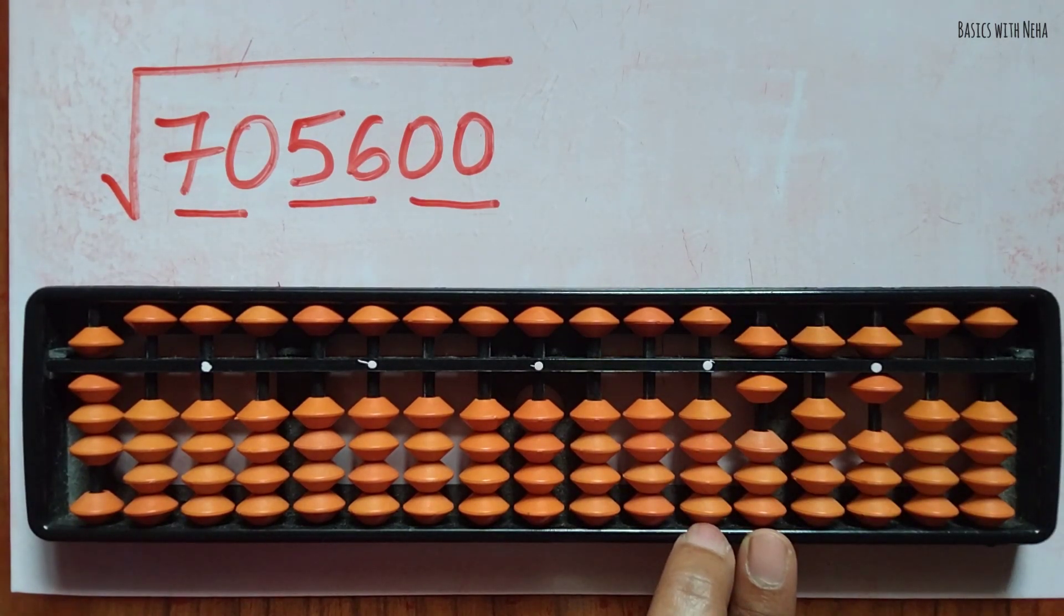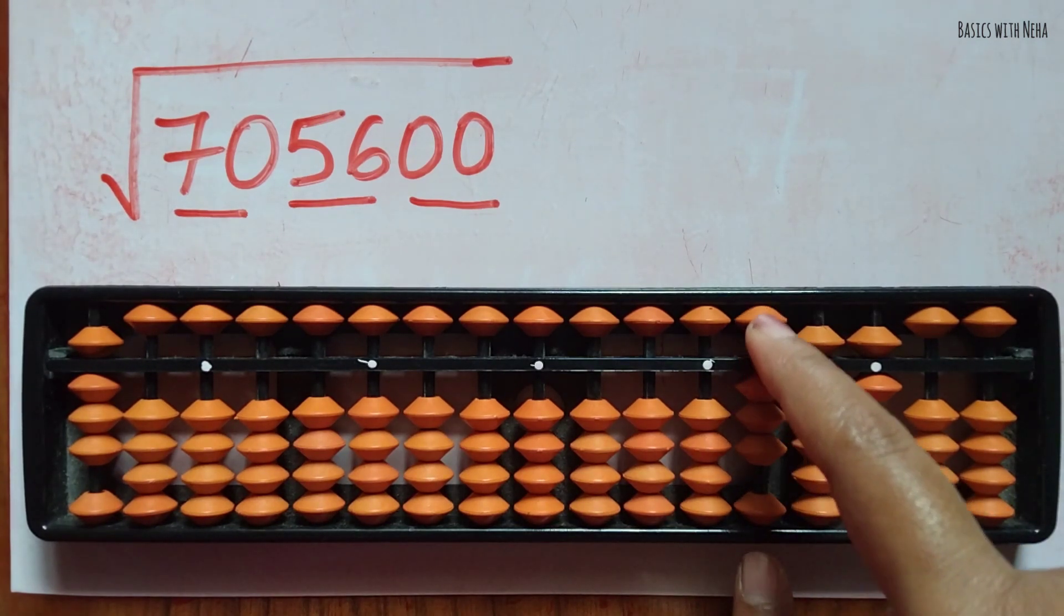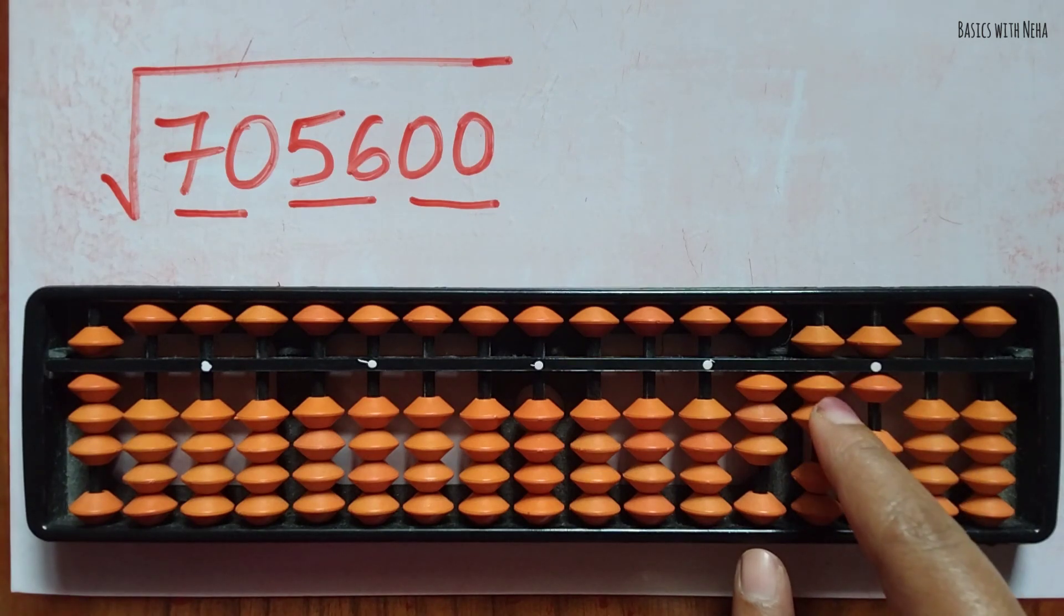We are done with these two. Now we have to half this number. Half of 6 is 3. Two twos are 4.